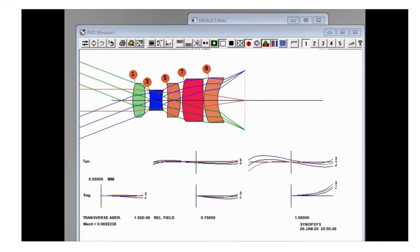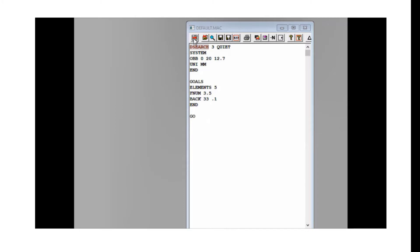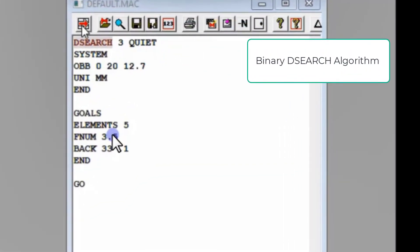With Synopsys, you don't need to do any of that. You will let the computer do the work for you. All you need to do is prepare this DSEARCH macro, stating your design goals: five elements, F number of 3.5, back focal length of 33, then run it in Synopsys.